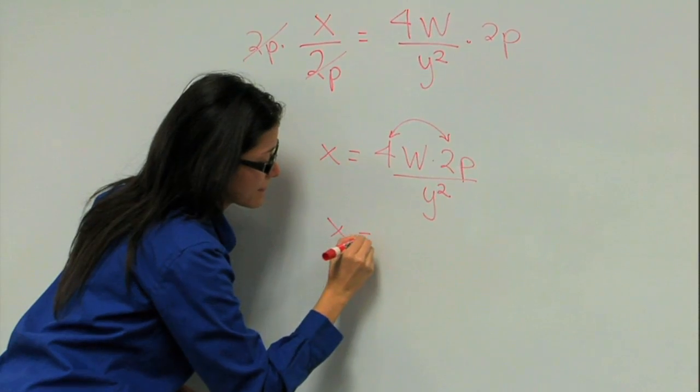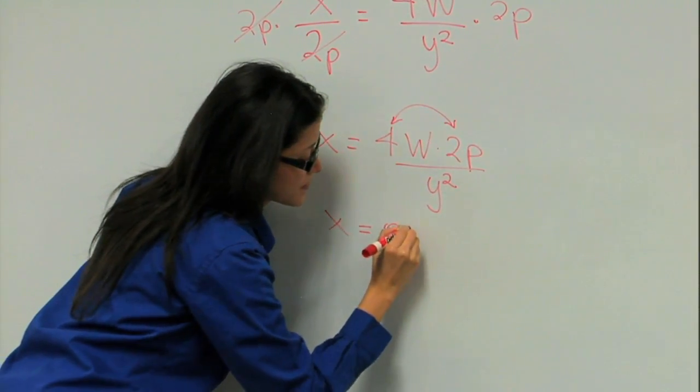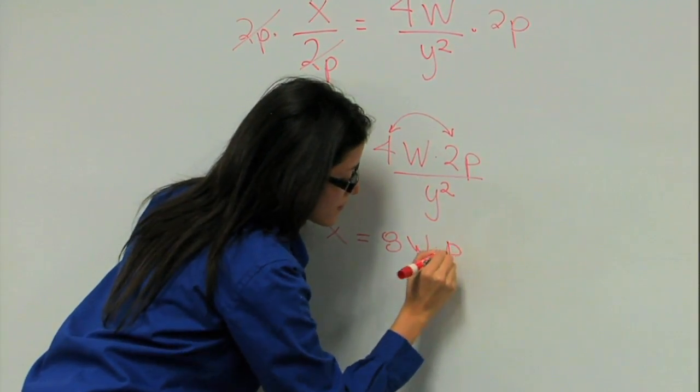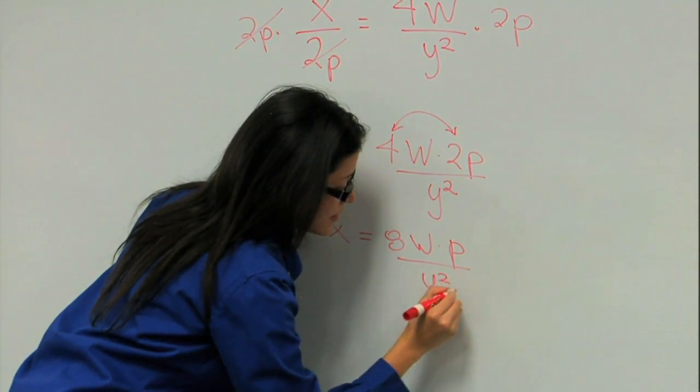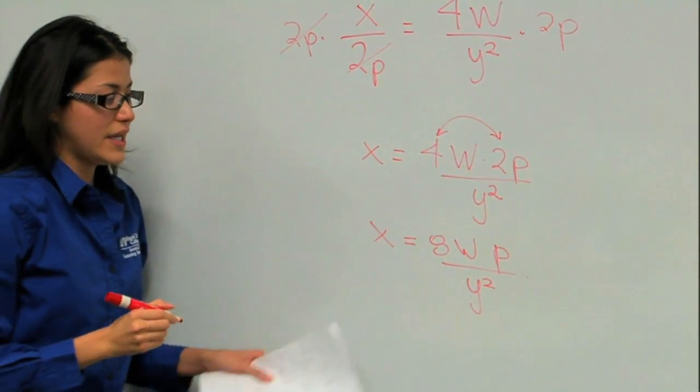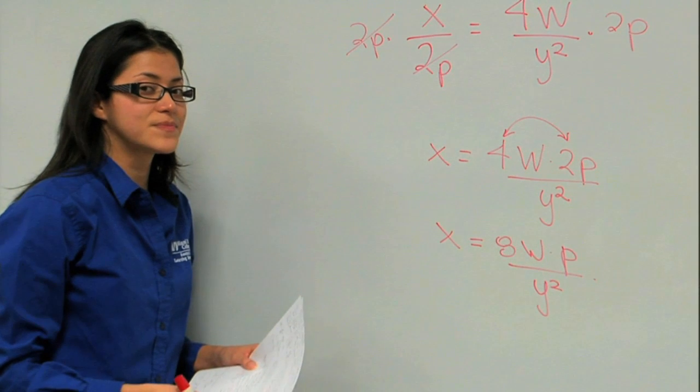So, 4 times 2 is 8. And then this is the final answer, and that's how you solve for x. Thank you.